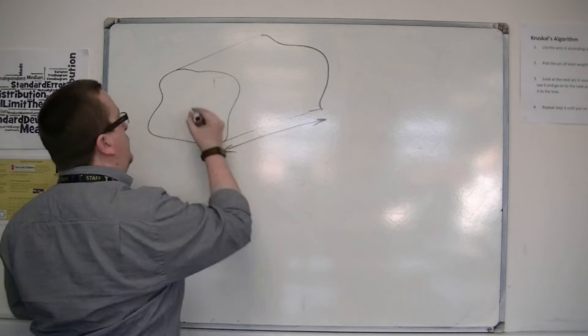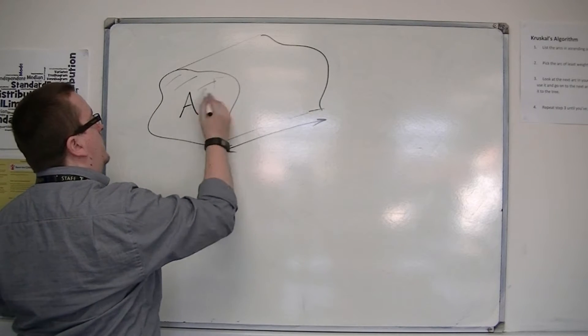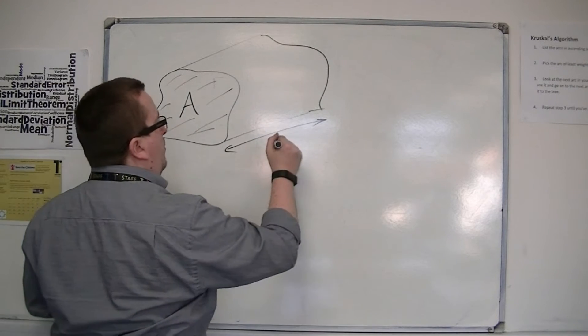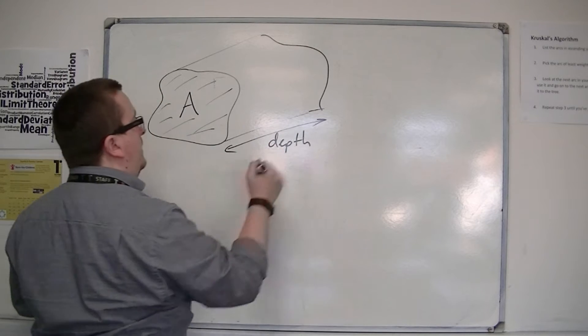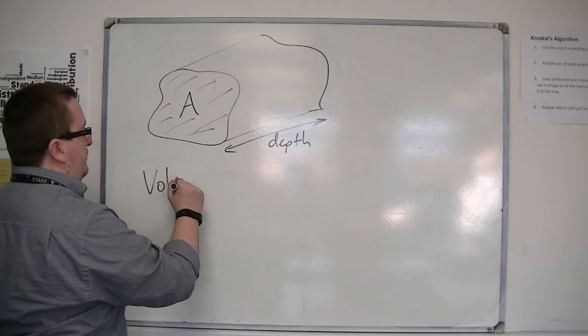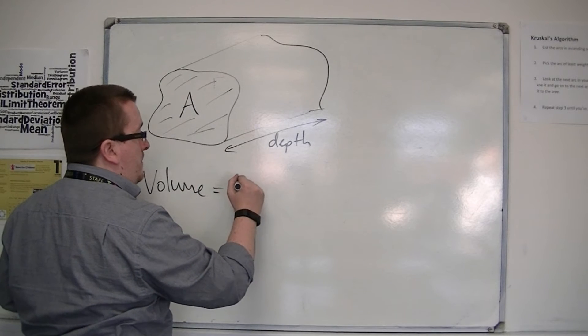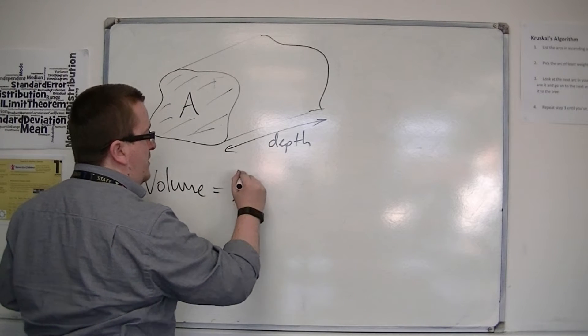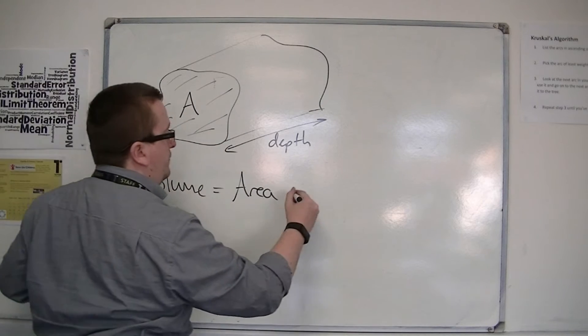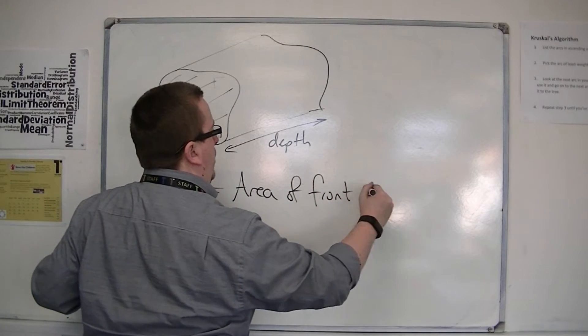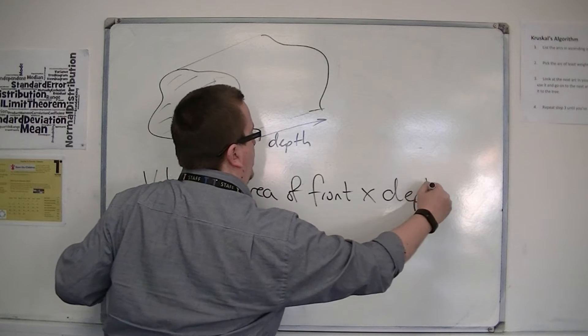If you get your front area and multiply it by the depth, then volume equals the front face area—so the area of the front multiplied by the depth.